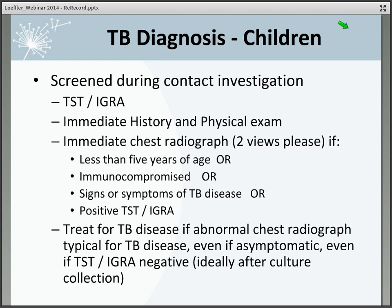Who deserves immediate treatment for TB disease among children evaluated during a contact investigation? Of course, if they have an abnormal chest radiograph typical for TB disease — including intrathoracic lymph node enlargement, parenchymal disease, or evidence of miliary tuberculosis. You want to start treatment even if the child is asymptomatic, because only 50 percent of U.S. kids come to attention because of symptoms or an abnormal chest radiograph. And you want to do that even if the skin test or IGRA is negative, because easily 25 percent of kids in the United States initially diagnosed with TB disease have a negative skin test or IGRA. Ideally, you will collect cultures first — sputum, induced sputum, or gastric aspirate.